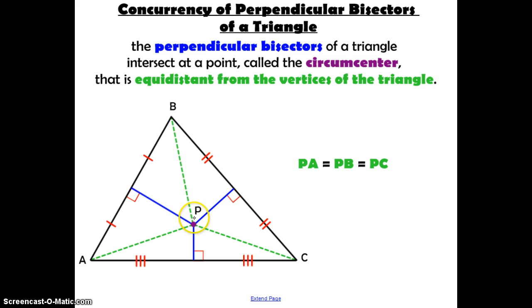We call that point the circumcenter, which we've labeled with P. A special property of the circumcenter is that it is equidistant from the vertices of the triangle. That means the length of segment PB, PC, and PA are all equal to each other.